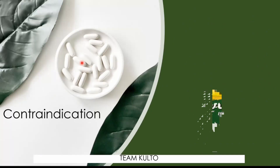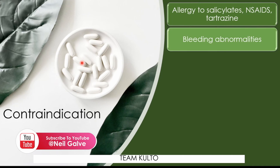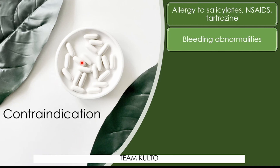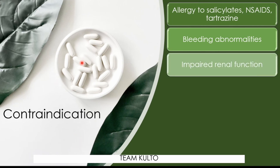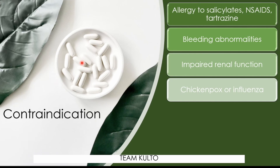Contraindications of aspirin: first, allergy to salicylates, NSAIDs, and tartrazine — a food coloring component. Also contraindicated with bleeding abnormalities and changes in platelet aggregation, since aspirin is a blood thinner and can promote further bleeding. Impaired renal function is also a contraindication, because this drug is secreted through urine — you need to check renal function to ensure the body can excrete the medication.